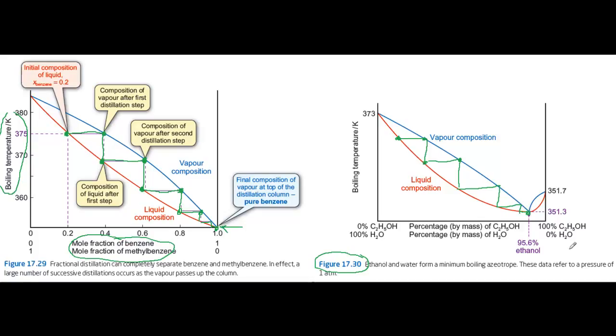But you would end up with a mixture that was 95.6% ethanol. And when you reach that mixture, the vapour coming off has the same composition as the liquid. It's called an azeotropic mixture. And you can't make the liquid any richer in ethanol by distillation alone after that.